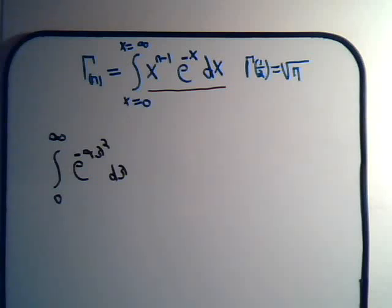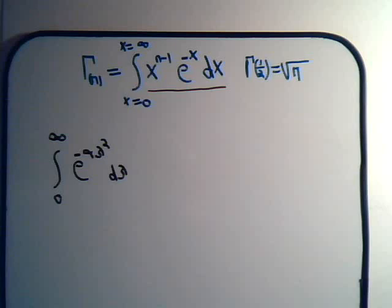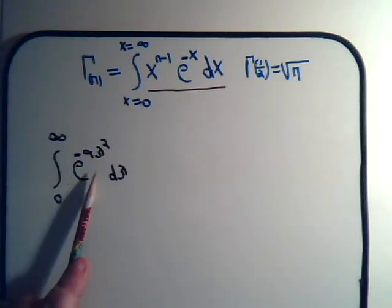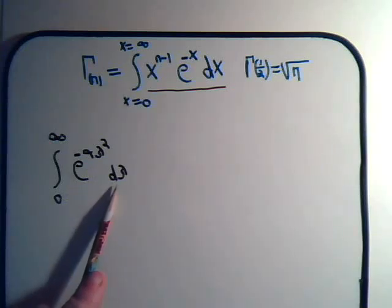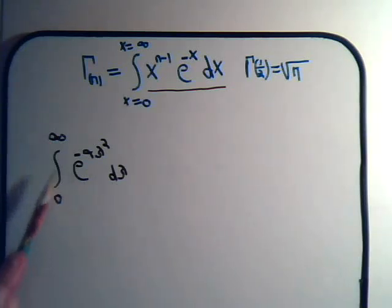We've been working a little bit now with gamma functions, and from our accrued knowledge we've been trying to use them to solve different types of integrals. Here we have the integral of e to the minus alpha lambda squared, d lambda, where lambda goes from zero to infinity.